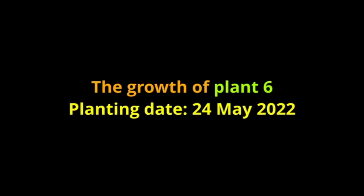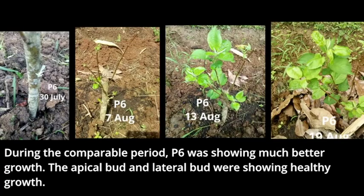At the comparable period, plant six was showing much better growth. Apical bud and lateral bud were showing healthy growth.